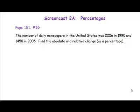This problem is number 65 from page 151. It reads, The number of daily newspapers in the United States was 2,226 in 1990 and 1,450 in 2005. Find the absolute and relative change, and they would like the relative change as a percentage.